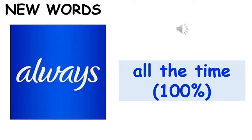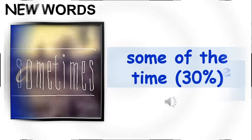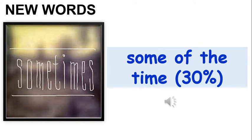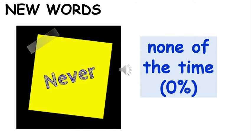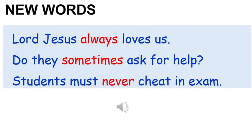Now let's learn the frequency adverbs. 'Always' means all the time, every day, every time — 100%. 'Sometimes' means some of your time, about 30% of your time. 'Never' means 0%, or none of the time. Here are example sentences: Lord Jesus always loves us. Do they sometimes ask for help? Students must never cheat in an exam.